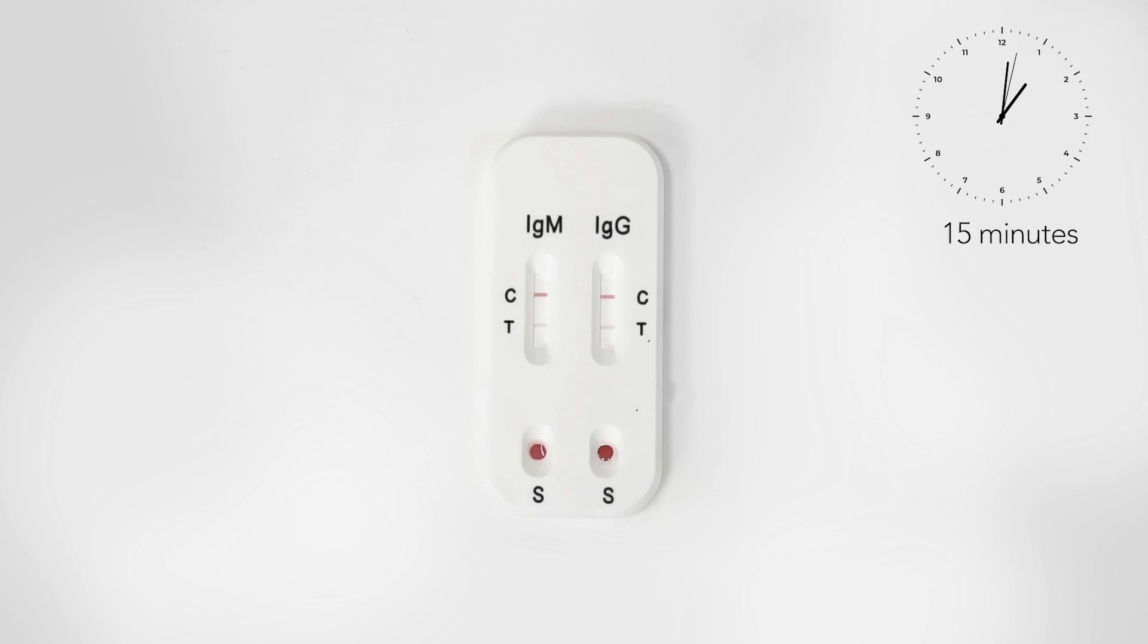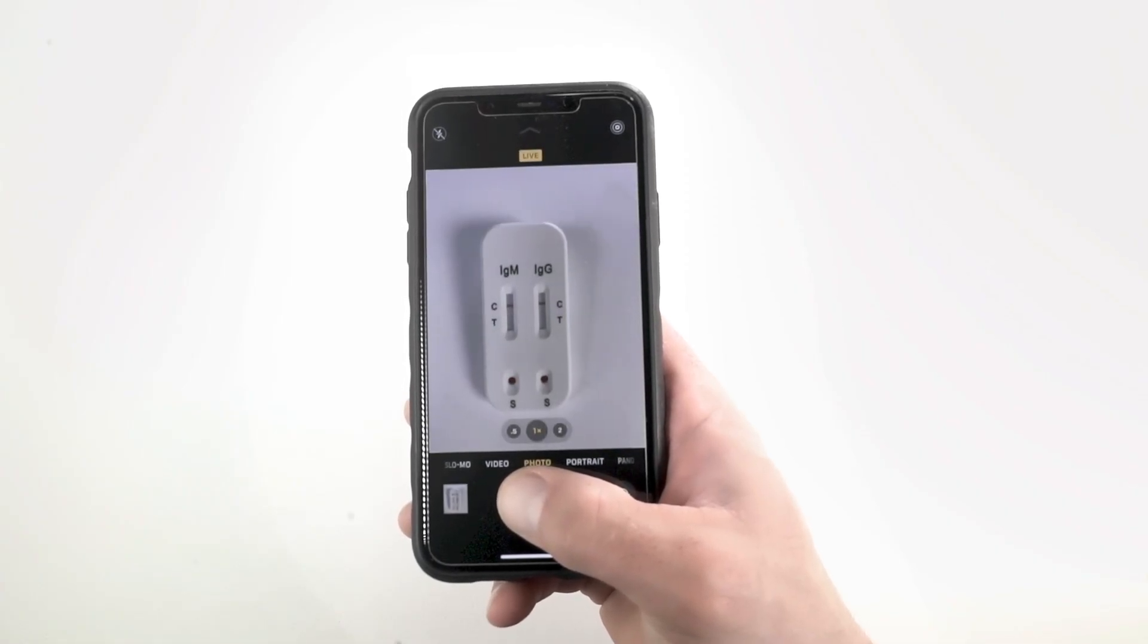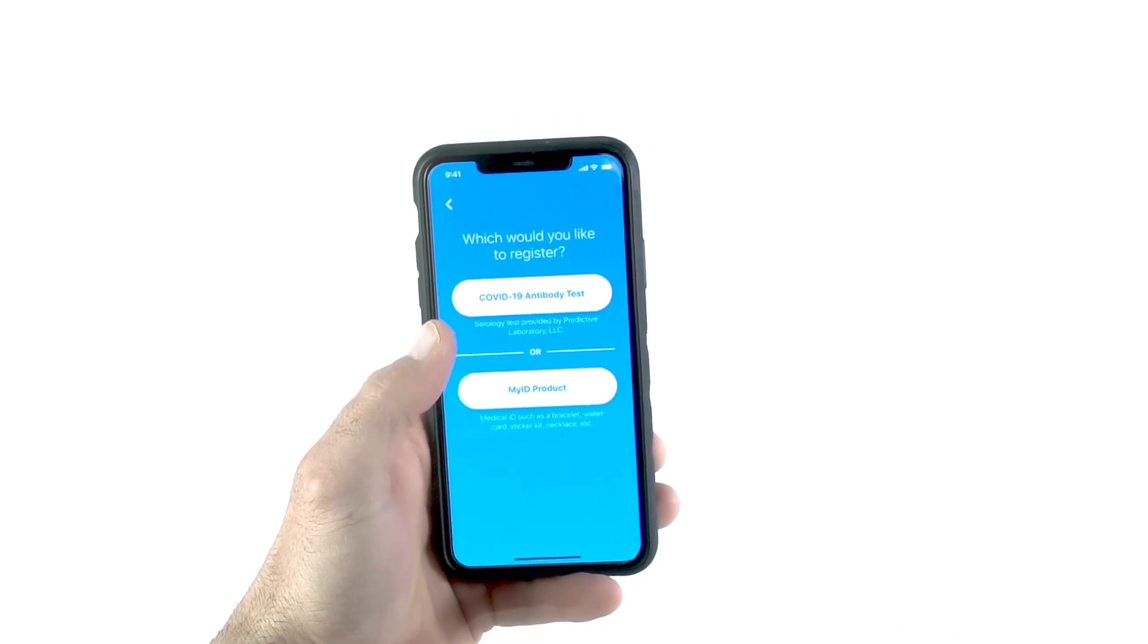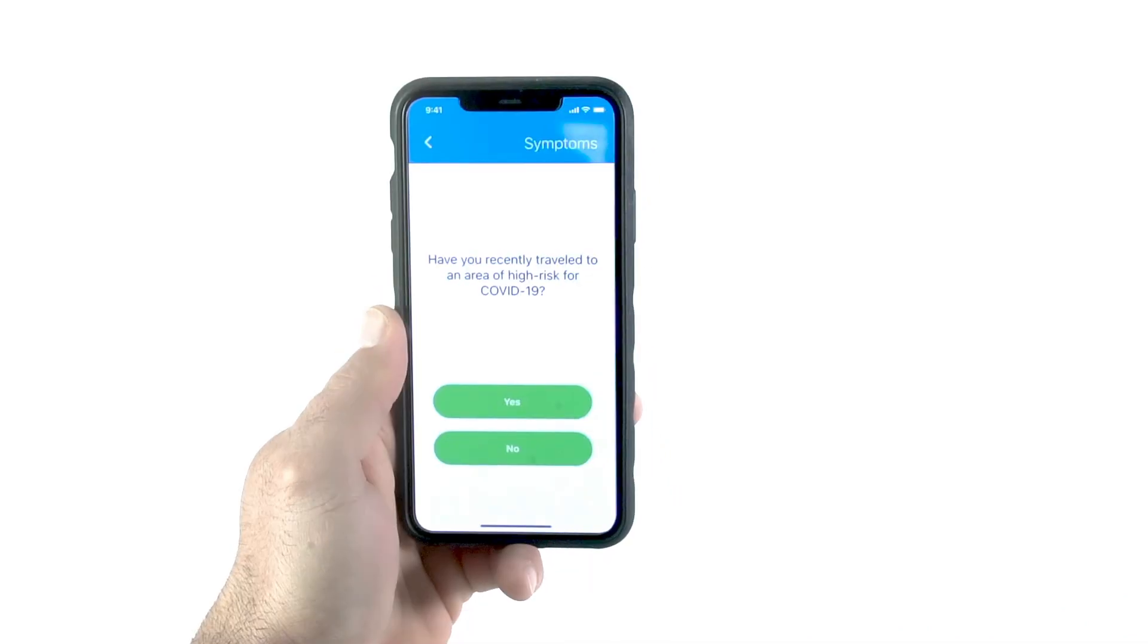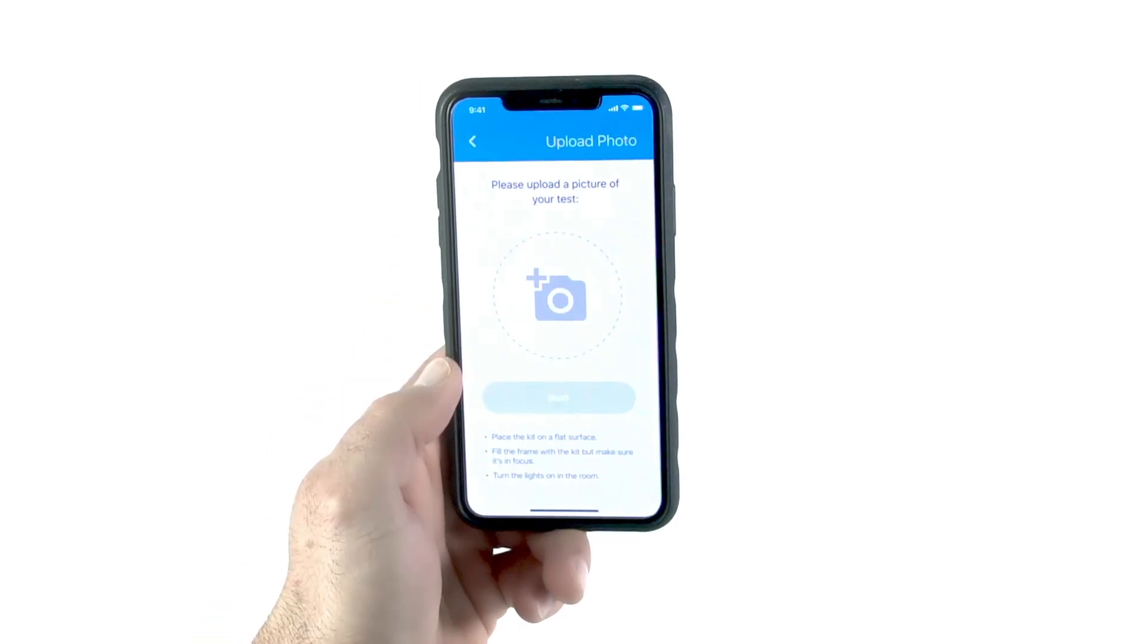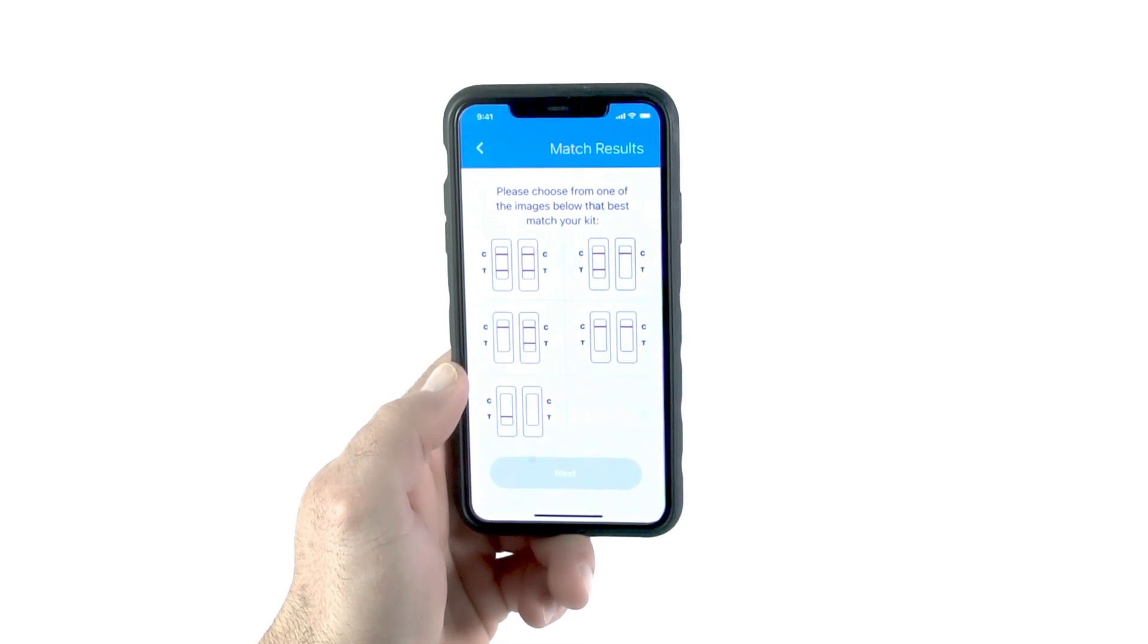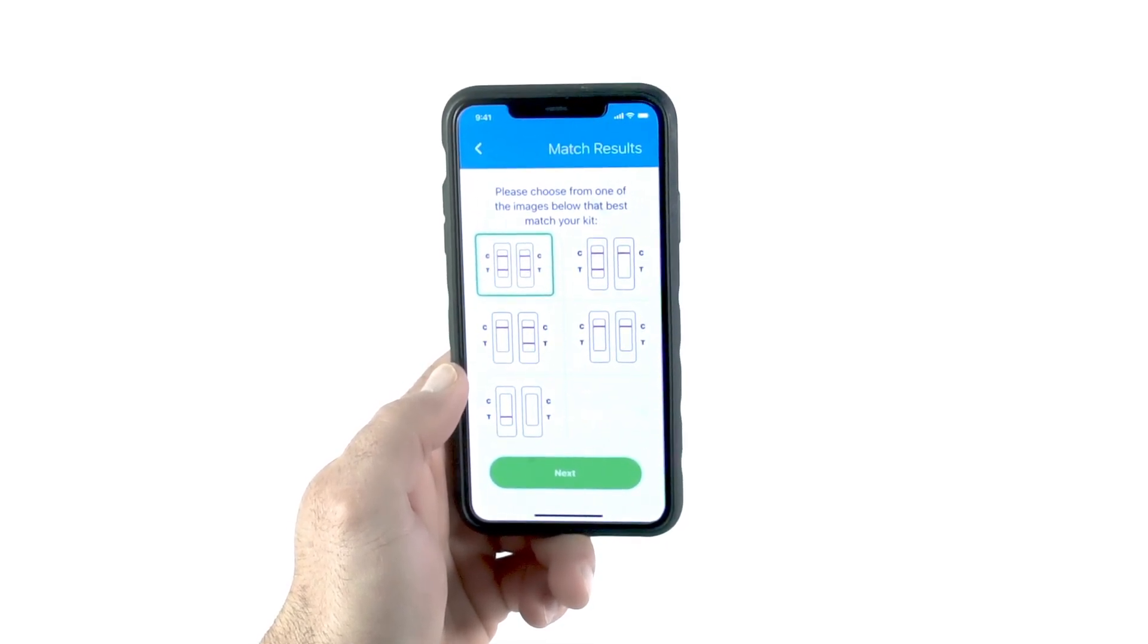Read your results and take a picture of the cassette between 15 and 20 minutes to get an accurate result. For analysis and verification, download the free MyID app to upload your results. Use of this app will help provide data to health departments and the CDC on the spread of the virus, as well as allow you to manage your results.